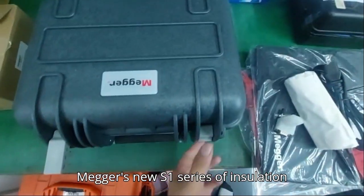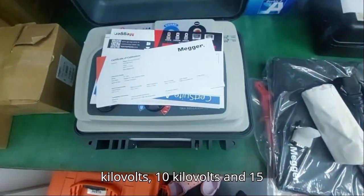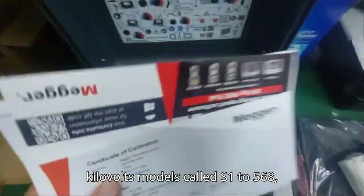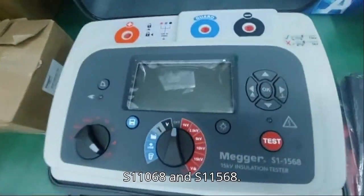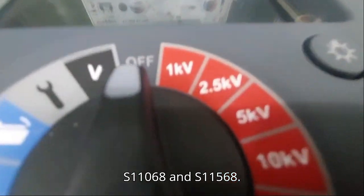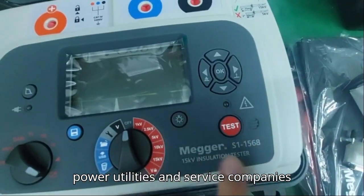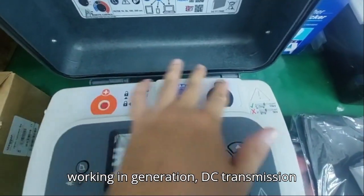Megger's new S1 series of insulation resistance testers consist of a 5kV, 10kV and 15kV models called S1-568, S1-1068 and S1-1568.